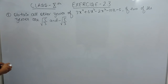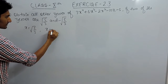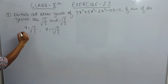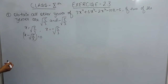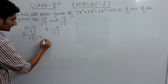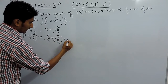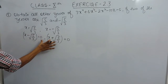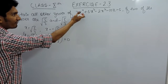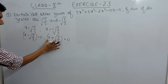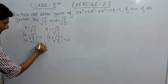We know that the values of x are √(5/3) and -√(5/3). When we shift these to the other side, (x - √(5/3)) must be a factor of this polynomial and (x + √(5/3)) must also be a factor. Since both are factors, their multiplication must also be a factor of this polynomial.